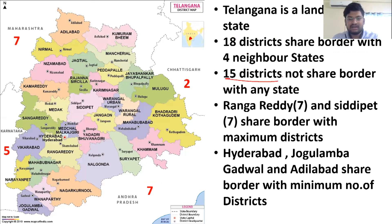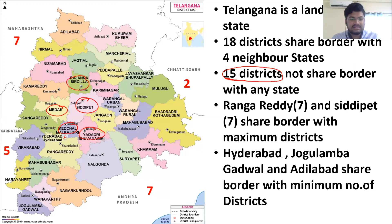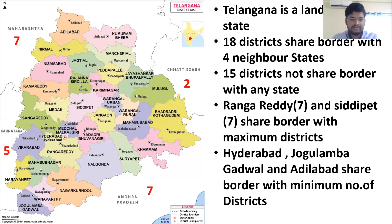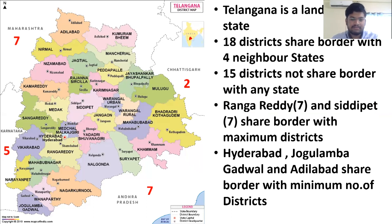There are 15 districts in Telangana which do not share border with any neighboring state — for example, Siddipet, Medak, Medchal, Yadadri Bhuvanagiri, Rajanna Sircilla, and Jagtial. Within the state, Rangareddy and Siddipet share border with the maximum number of districts, as they are located in the interior part of Telangana.